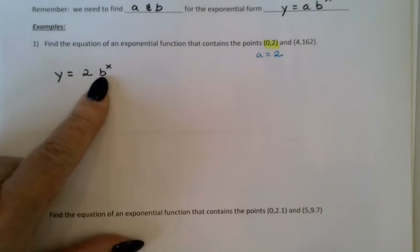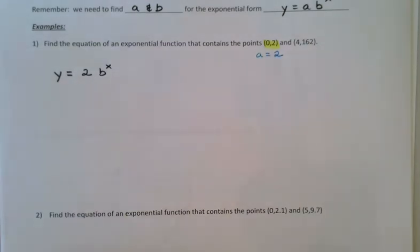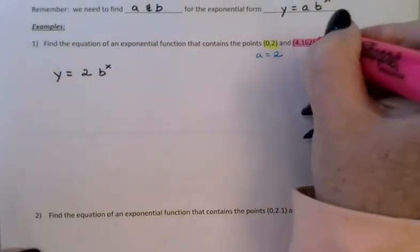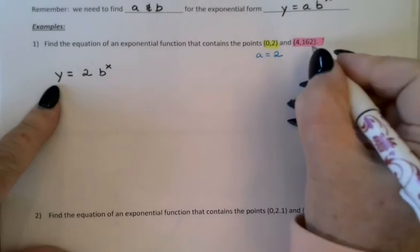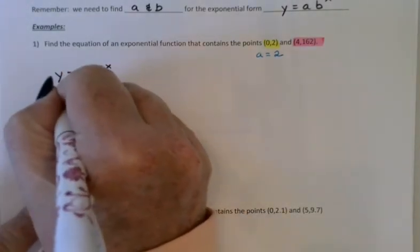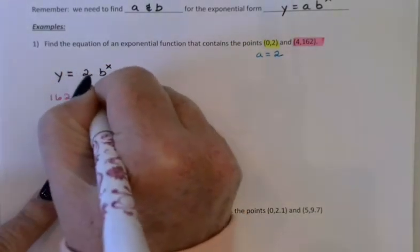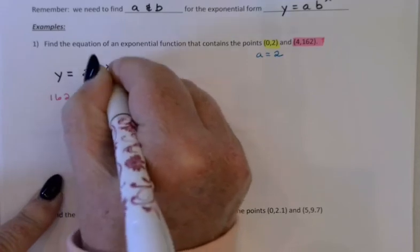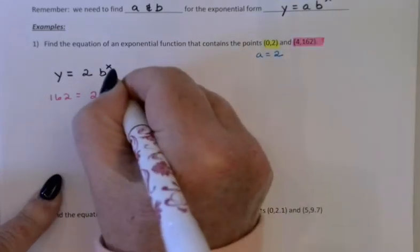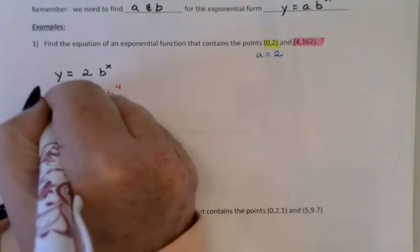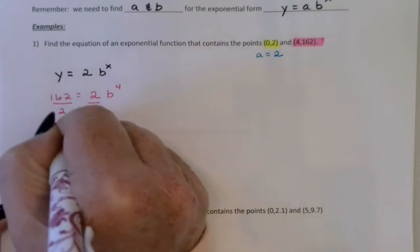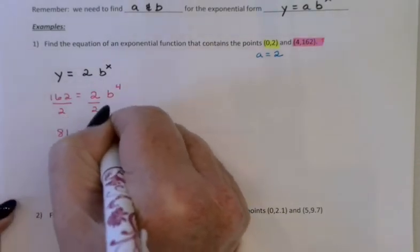I now need to figure out the b. And in order to do that, I'm going to substitute this second point into my equation. The y value is 162. That's equal to 2 times b to the x, but x is 4. That equation will allow me to solve for b. We'll divide by 2. So 81 equals b to the 4th.